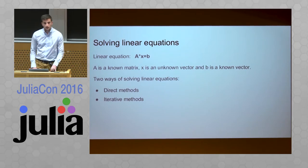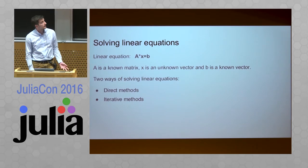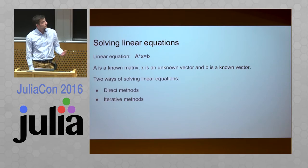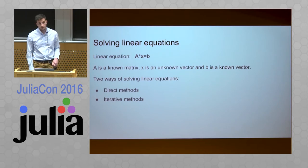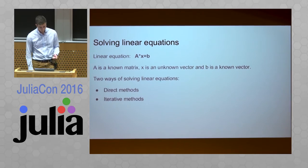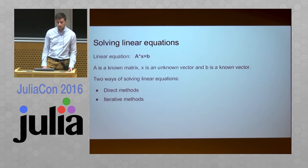A linear equation looks like this: A times x equals b, where x and b are vectors, x is unknown, and A for some solvers can be either a matrix or something like a function that can calculate the result of a matrix-vector product. There are just two ways to solve these equations: with direct methods or iterative methods.